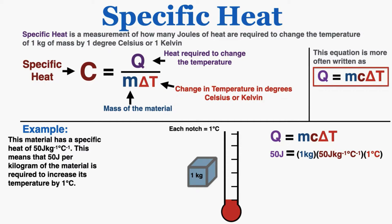Remember that those changes are the same. The equation for specific heat is the heat required to change the temperature divided by the mass of the material multiplied by the change in temperature in degrees Celsius or Kelvin.